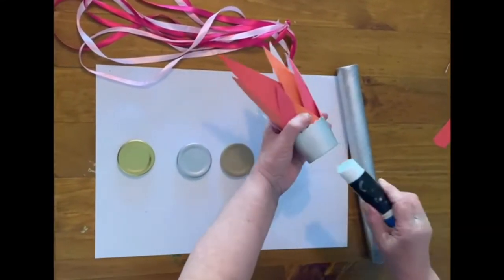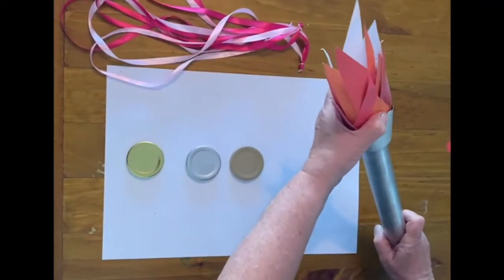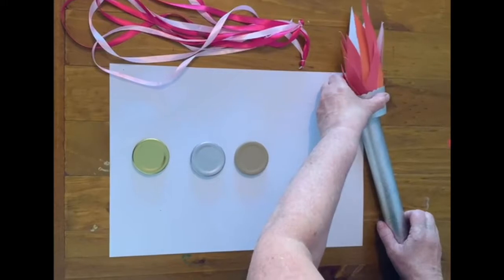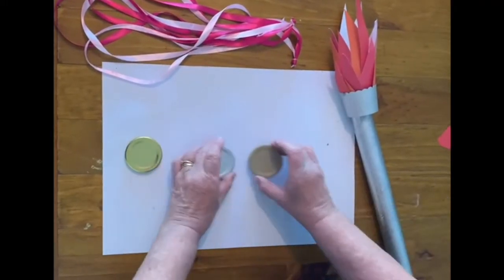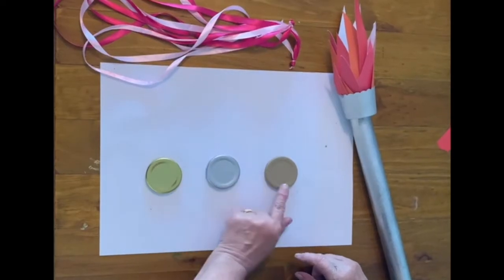Once you've popped them into the cupcake holder just pop some glue and you can see that I've painted my torch silver or you could wrap some aluminum foil around it.